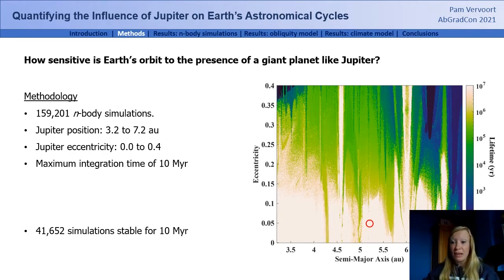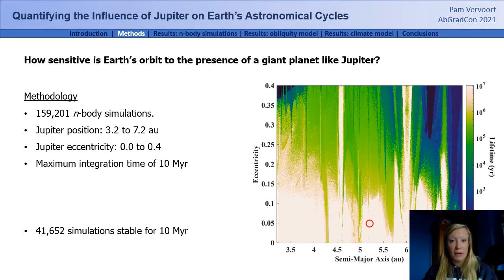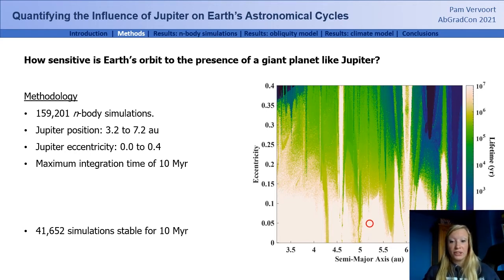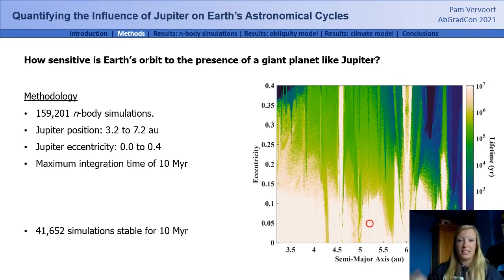The lifetime of each individual simulation is indicated in the figure. The eccentricity of Jupiter is indicated by the y-axis, whereas the semi-major axis of Jupiter is indicated by the x-axis. Overall, simulations where Jupiter has a low eccentricity are dynamically more stable than when Jupiter would have had a high eccentricity. The red circle indicates our current solar system configuration and will be indicated in the next few figures as well.